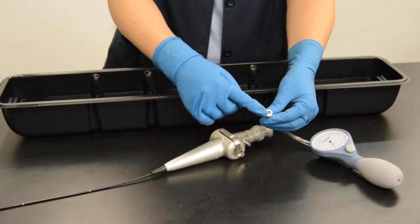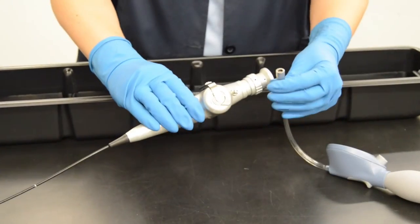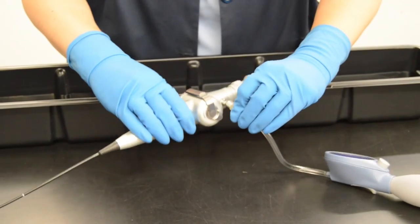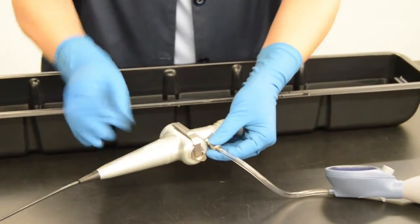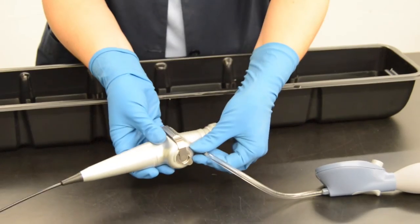Connect the leak tester to the vent by aligning the pin in the leak tester connector with the groove on the vent, pushing down and rotating the leak tester connector clockwise one-quarter turn.